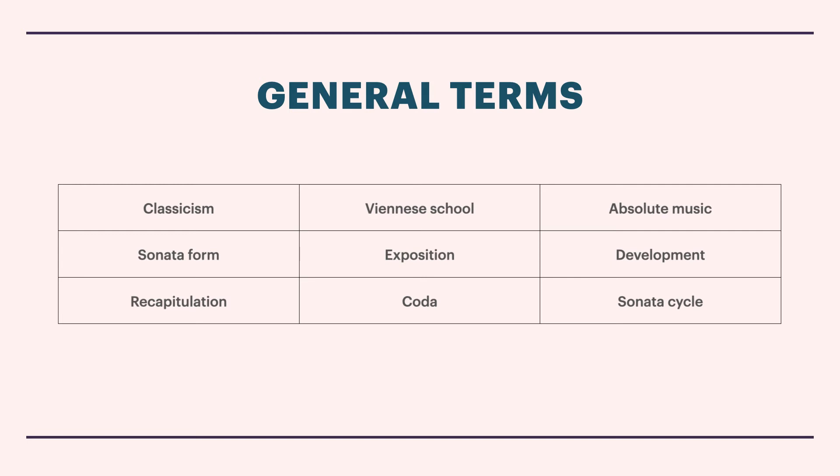These are the general terms that RCM wants you to know for the Classical era. We have Classicism, Viennese School, and Absolute Music in the top row. And then separately, all joined together, we have Sonata Form, Exposition, Development, Recapitulation, Coda, and Sonata Cycle. Those bottom terms all deal with what Sonata Form is, and we're going to have an entire separate video about that. Today, we're just going to be looking at those top terms: Classicism, Viennese School, and Absolute Music.